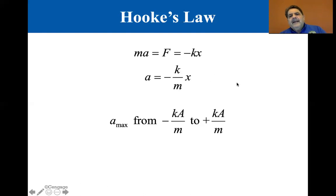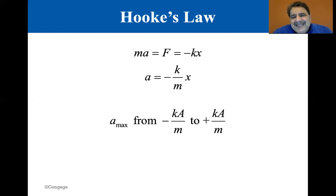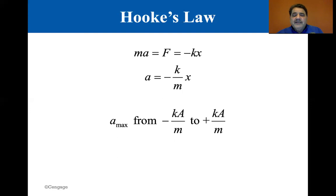Now, Hooke's Law: from Newton's second law, force equals mass times acceleration, and force equals minus Kx. If we divide by M, we get acceleration equals minus K over M times X. So the maximum acceleration goes from minus K over M times A to plus K over M times A. The acceleration is most extreme at either end — as the block slides to the end, it's slowing down and reversing direction. We'll see that when we do the Walter Fent experiment.